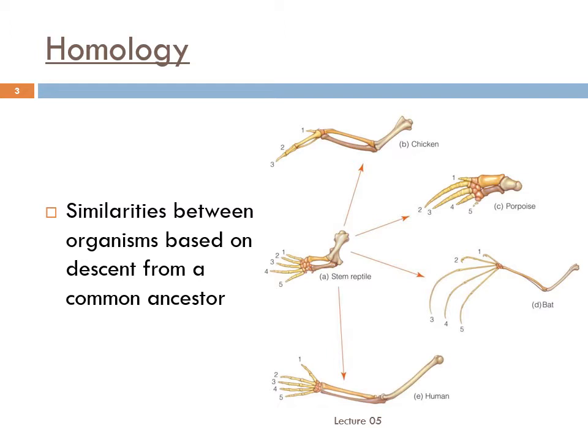This image is a classic way of describing homology. It shows the skeletal structure of several vertebrates' forelimbs. You'll notice that, despite the differences in shape and size, the numbers of bones and how they articulate with one another are very similar. This is because all of the species inherited that structure from their common ancestor, the so-called stem reptile.